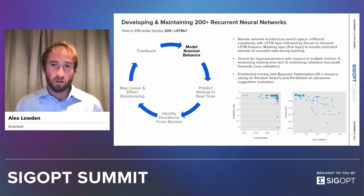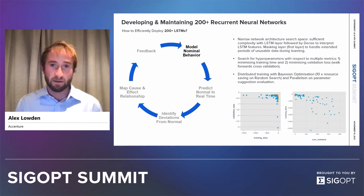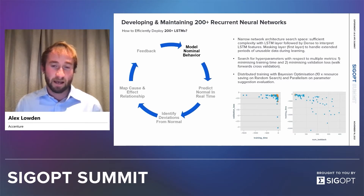You can also standardize your architecture to some extent by having, for example, masking layers as your first layer to handle extended periods of unusable data, and then an LSTM layer and a dense layer, and then controlling capacity through a number of neurons.